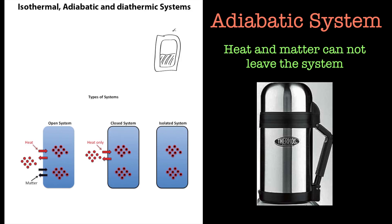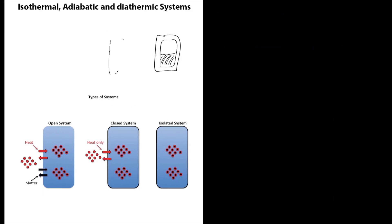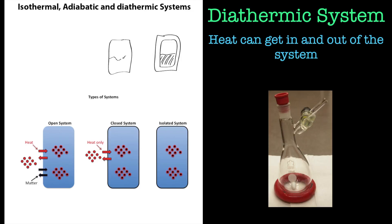A diathermic system, on the other hand, is a bit more like a closed system. So it's just a reaction flask, and in this example, heat can get in and heat can get out.